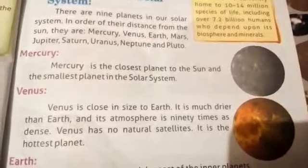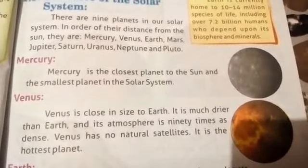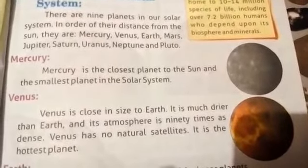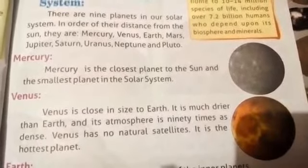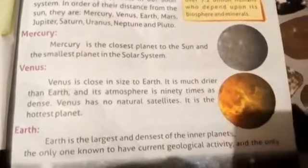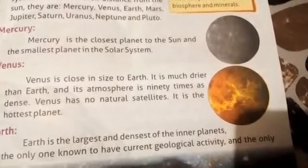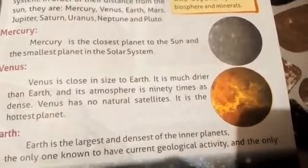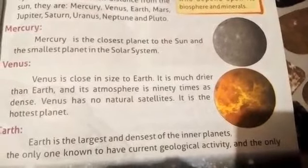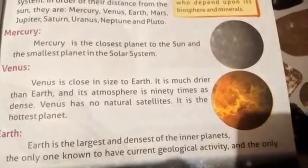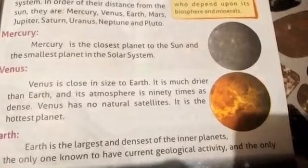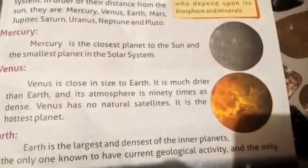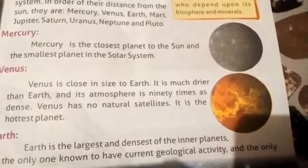Mercury is the closest planet to the sun and the smallest planet in the solar system. Venus is the closest in size to Earth. It is much drier than Earth and its atmosphere is 90 times as dense. Venus has no natural satellites and it is the hottest planet.